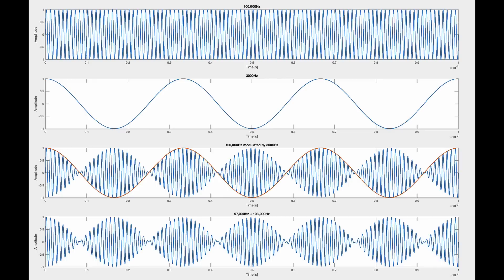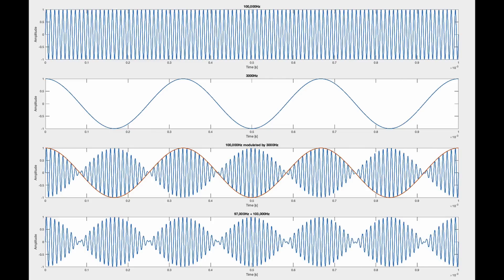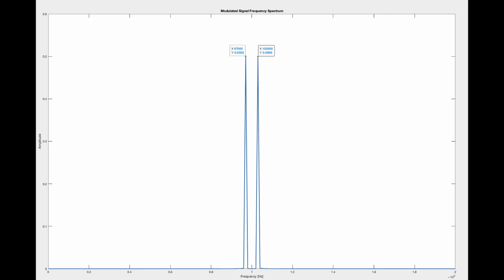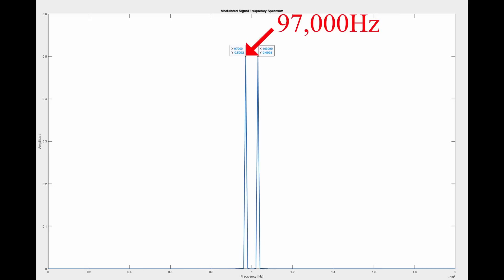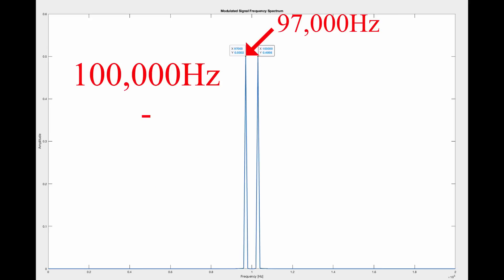But when we modulate 3000 Hz with 100,000 Hz, we actually multiply the signals. So in reality, neither 100,000 Hz or 3000 Hz exist in this signal anymore. But we can use those numbers to calculate which frequencies do exist there. You just take your original frequencies and you add them, which gives us 103,000 Hz. And 97,000 Hz is just 100,000 Hz minus 3000 Hz.